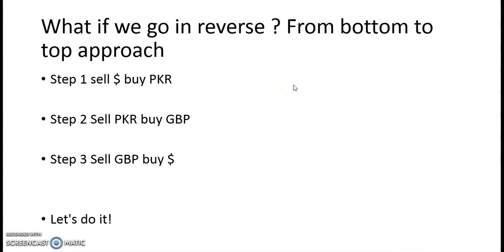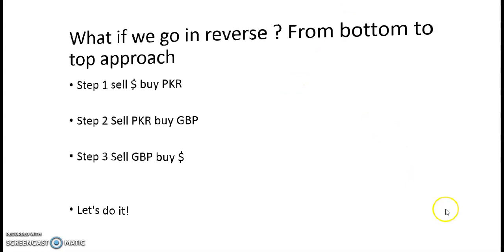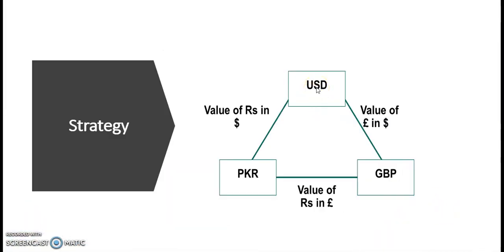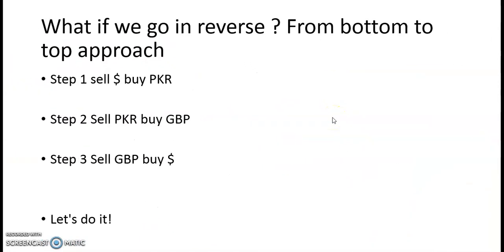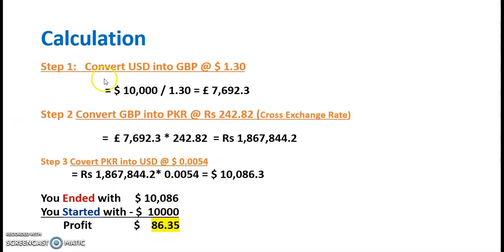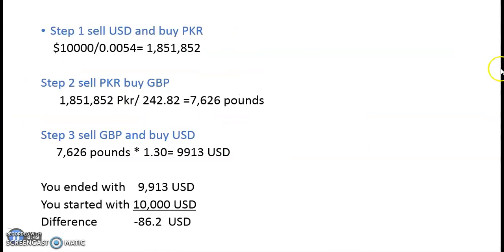Now let's think about the reverse direction — going from bottom to top. If we consider it clockwise as US dollar → GBP → PKR, the reverse would be US dollar → PKR → GBP → US dollar. As I already mentioned, one way will always give us a profit and the other will always give a loss. We checked one way — clockwise, top to down — which gave us a profit. Now let's see what happens in reverse order.